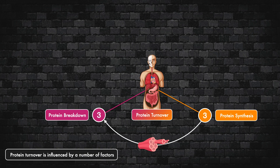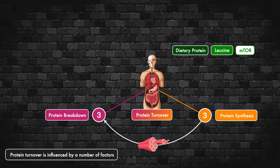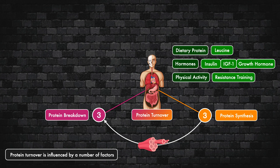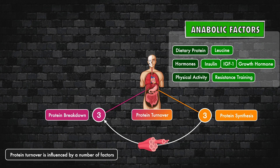Protein turnover is influenced by a number of factors. Factors that stimulate protein synthesis include the intake of dietary protein — especially the branched-chain amino acid leucine, due to its role in activating the specialized enzyme mTOR — hormones like insulin, insulin-like growth factor 1, and growth hormone, and physical activity, specifically resistance training, because engaging in it lowers the threshold for protein synthesis to begin. We can call these the anabolic factors.